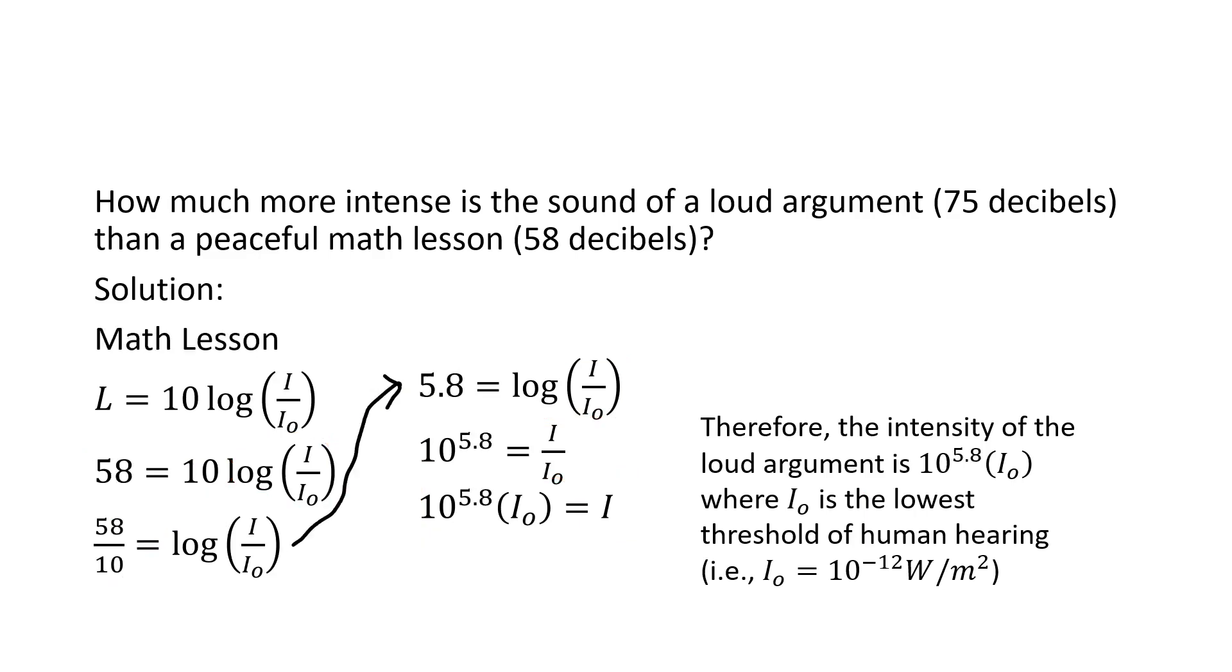Now, let's look at the peaceful math lesson. The peaceful math lesson, same process. We let 58 equal 10 log I over I naught. Dividing both sides by 10, we end up ultimately with 5.8 equals log of I over I naught.